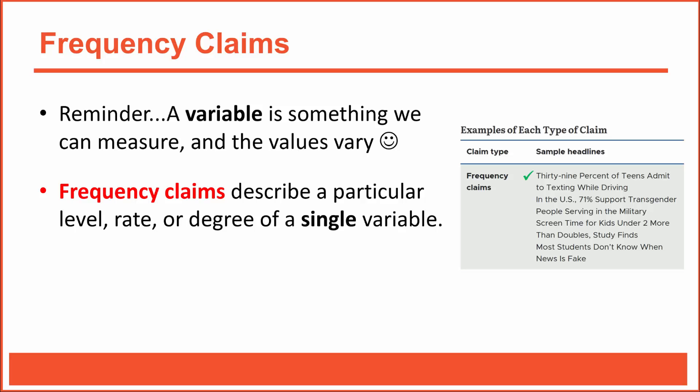Here's another example of a frequency claim shown as a sample headline: '39% of teens admit to texting while driving.' That's a claim based on one single variable — teens were asked if they text while driving or how often they do, and 39% admitted that they do. One thing you'll notice is that variables used in frequency claims are always measured variables, never manipulated variables. Manipulated variables are used in causal claims, but never in frequency claims.